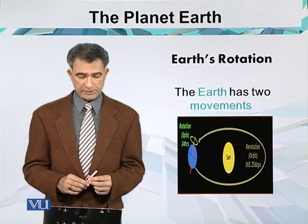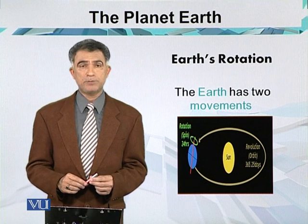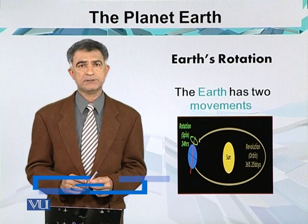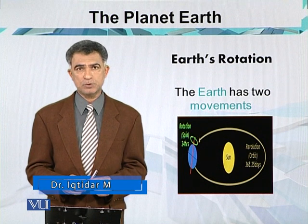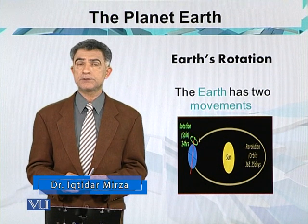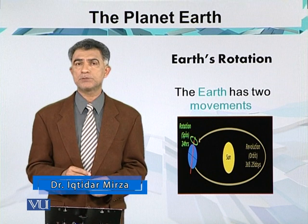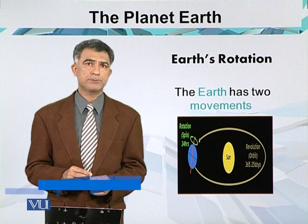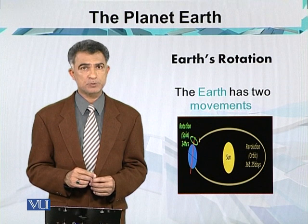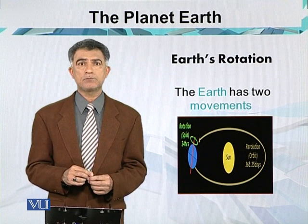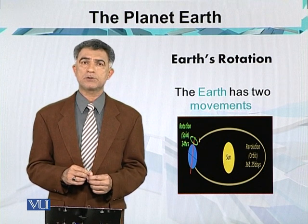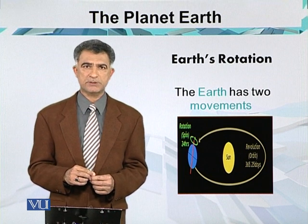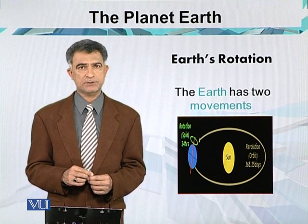Earth rotation is the movement when the Earth is revolving around its own axis. These axes are the north-south poles. This is actually the axis of rotation.